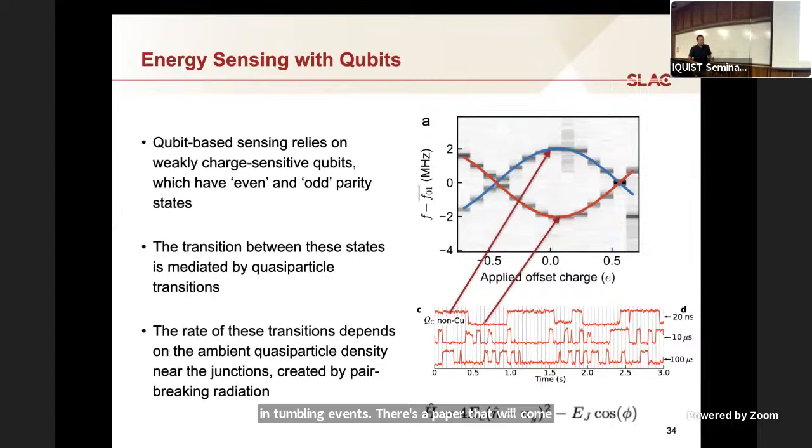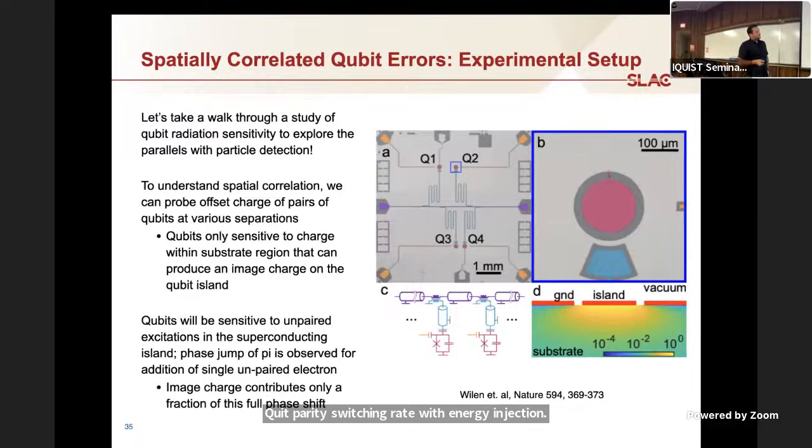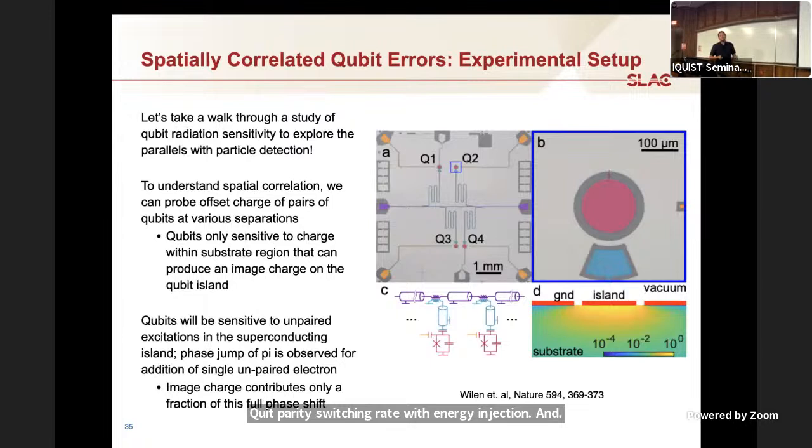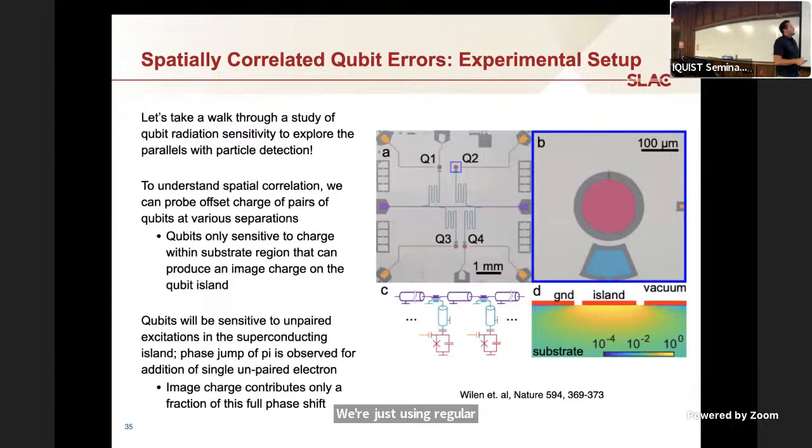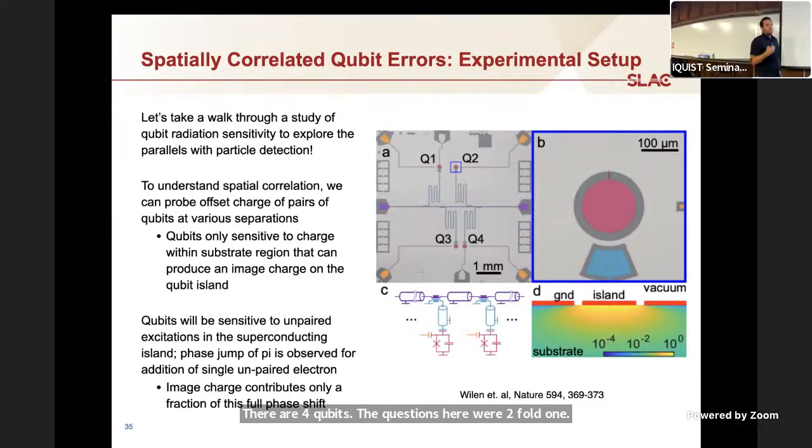I can sit at the degeneracy point here where I have high dependence of this frequency on charge, so dfdq is very high, or I can sit at a saddle point where dfdq is zero. When I see a quasi-particle tunnel from one side of the junction to the other, I get a discrete shift to my transition frequency. Here I'm showing time streams from a pump probe experiment that the Syracuse group, Britain Ford's group did, with some conventional qubits. They show that as you increase the energy injection rate into the substrate, you see a statistical increase in tunneling events. There's a paper that will come out in about a month showing that these are indeed phonon events. You can correlate qubit parity switching rate with energy injection.